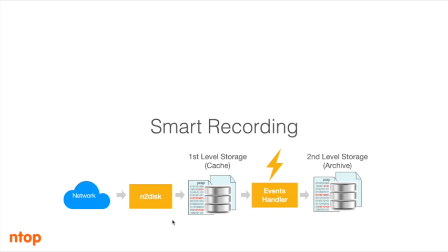Now let's talk about smart recording. With smart recording we wanted to change the architecture by splitting storage into two levels: a first-level storage called cache, and a second-level storage called the archive. The idea is to continuously record data in the first-level storage as we do today with ntopdisc, but when an event is triggered — by ntopng or by third-party applications like an IDS — we move the pcap data matching those events to the second-level storage. The archive can have much higher retention because pcap data matching events requires much less disk space than full traffic.